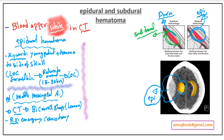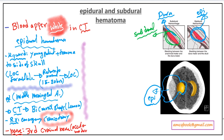The most common nerve affected in epidural hematoma is the third cranial nerve, leading to third cranial nerve palsy — oculomotor palsy. To summarize: epidural hematoma appears as a lemon shape on CT, requires emergency craniotomy, and is caused by rupture of the middle meningeal artery.